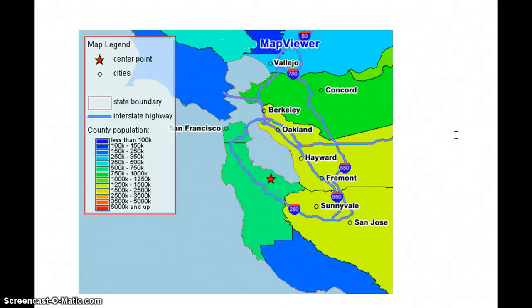The next element of a map we will discuss is a legend. A legend is a table explaining colors and symbols used on a map.